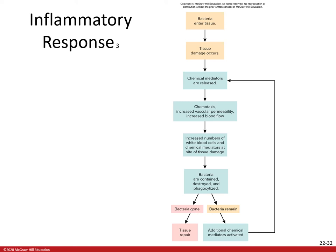The diagram shows an inflammatory response where bacteria cause tissue damage, and the release of chemical mediators initiates inflammation and phagocytosis to hopefully result in the destruction of the bacteria. If bacteria remain, more chemical mediators are released and the process restarts until the bacteria are gone and tissue repair can begin.